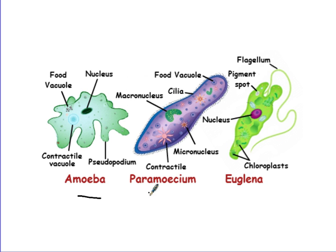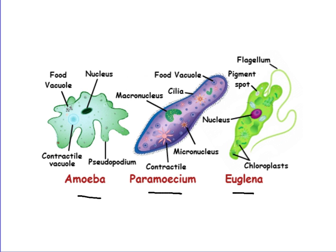We have the amoeba, the paramecium, and the euglena. They are all protists. Now look at certain structures they have. The amoeba has a food vacuole, a nucleus, pseudopodium, and a contractile vacuole. The paramecium has a macronucleus, cilia, food vacuole, micronucleus, and a contractile vacuole. The euglena has a flagellum, pigment spot, nucleus, and chloroplasts.